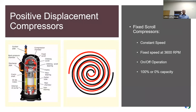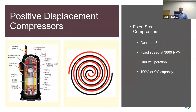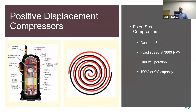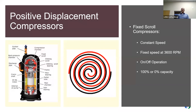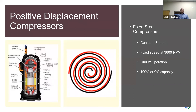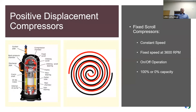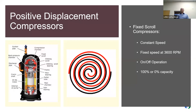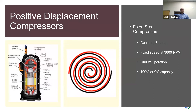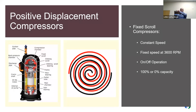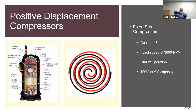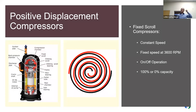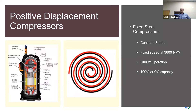The fixed scroll operates at a constant 3,600 RPM regardless. If you want any type of capacity control, you simply shut it on and off — that's how you modulate or control this compressor. That of course creates a sine wave and temperature differential, so it's not as smooth. Traditionally, we use multiple compressors in these applications.